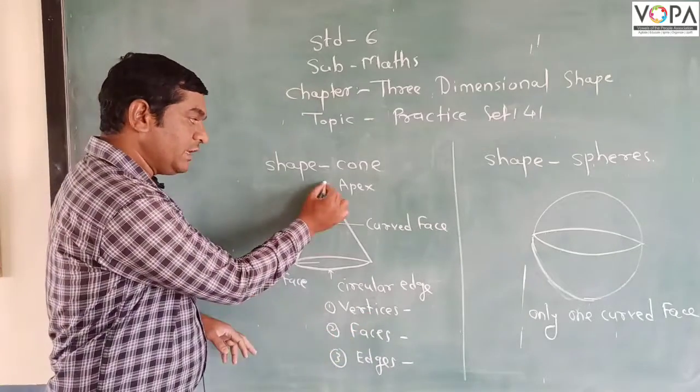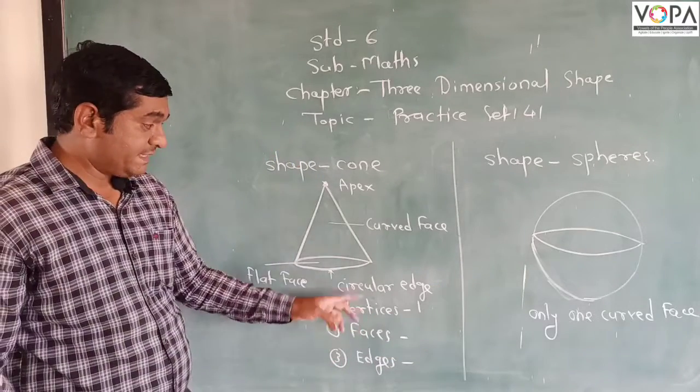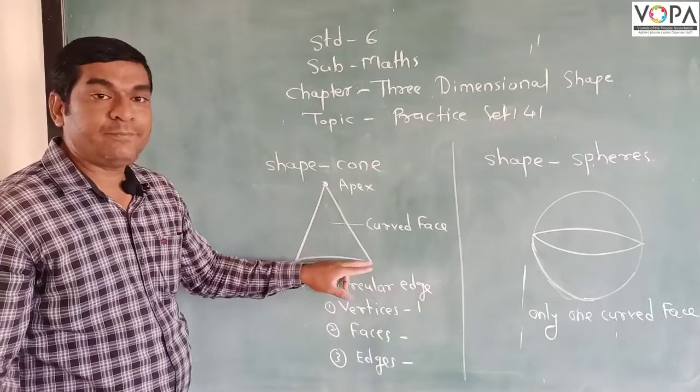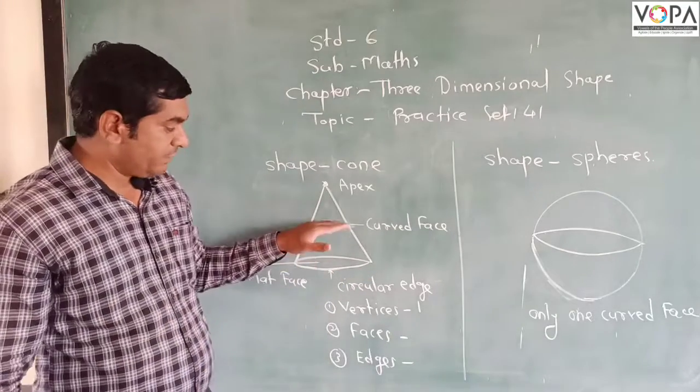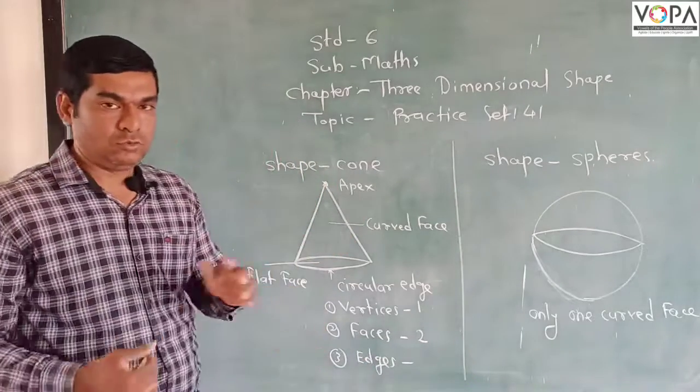So the number of vertices, only one vertex is there. How many vertices are there? One. So the faces, this curve is only one face there and the flat face. Then how many faces are there? One and two. So the number of faces in a cone is two.